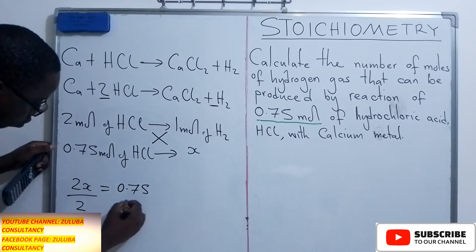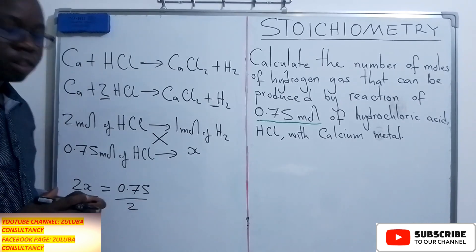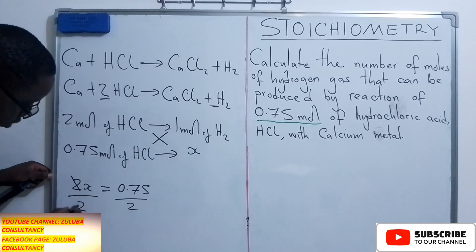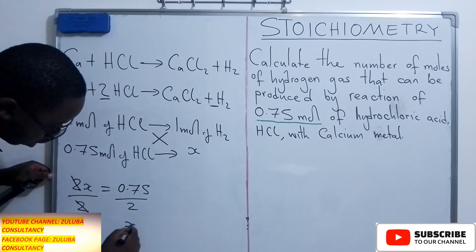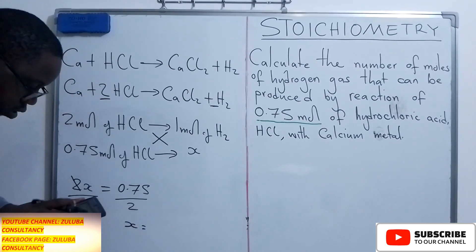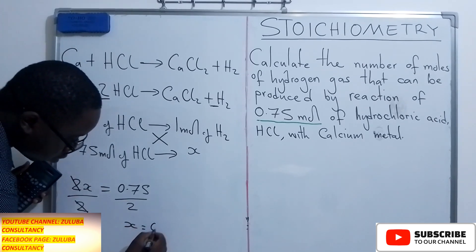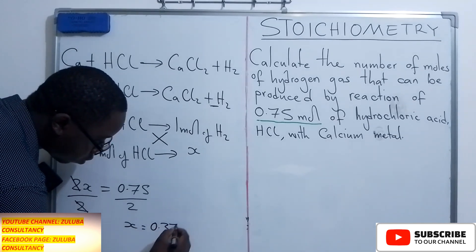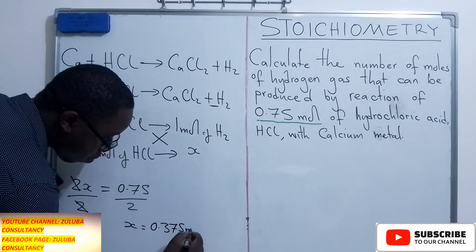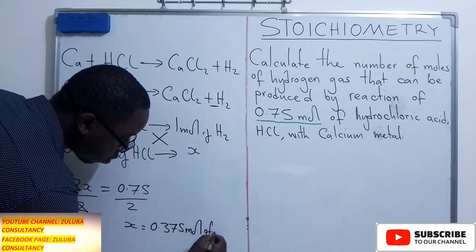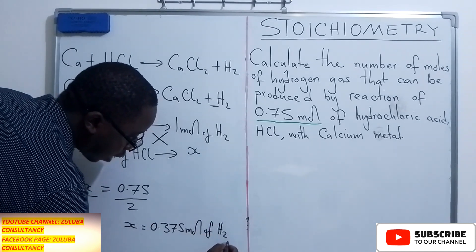So for you to find the value of x, we are saying divided by 2 divided by 2. At this point, we can simplify these two. We have x is equal to the value of 0.75 divided by 2 is 0.375 moles of hydrogen gas.